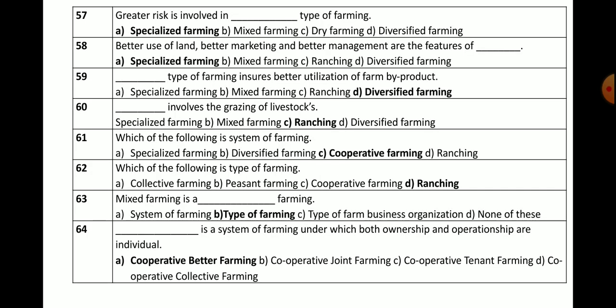Question number 57: Greater risk is involved in which type of farming? Options: specialized, mixed, dry, or diversified. The correct answer is specialized farming — greater risk is involved in specialized farming.